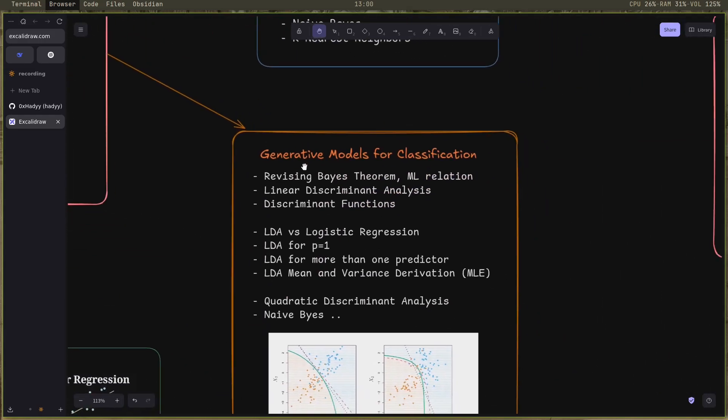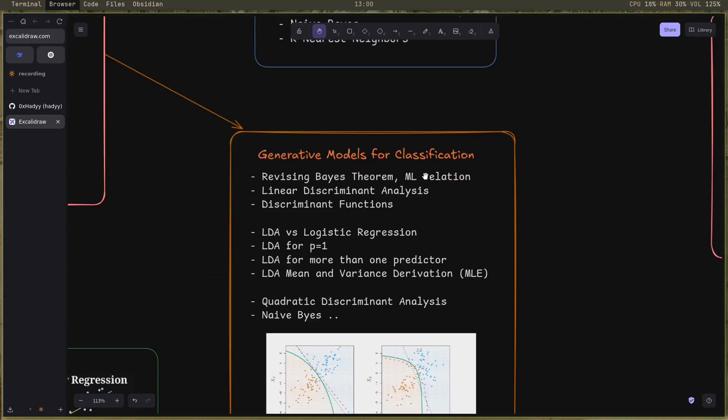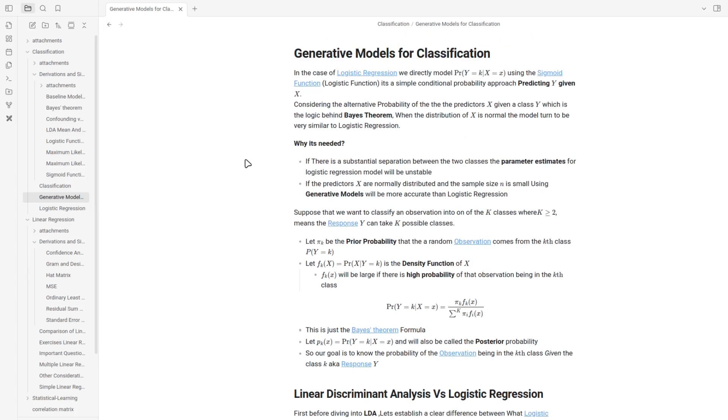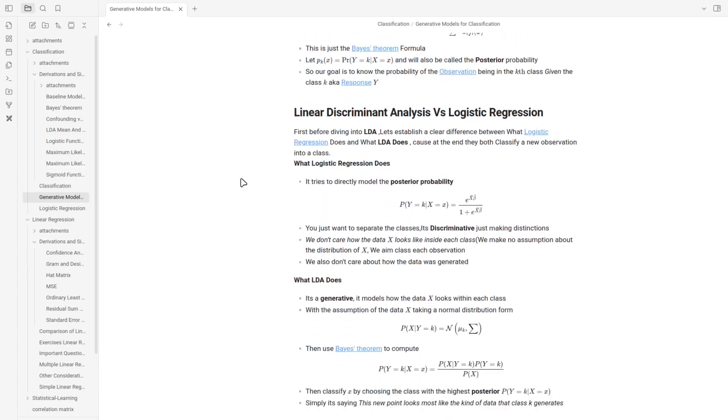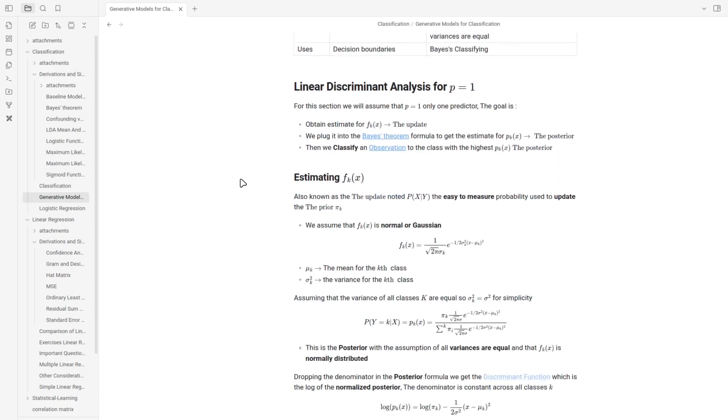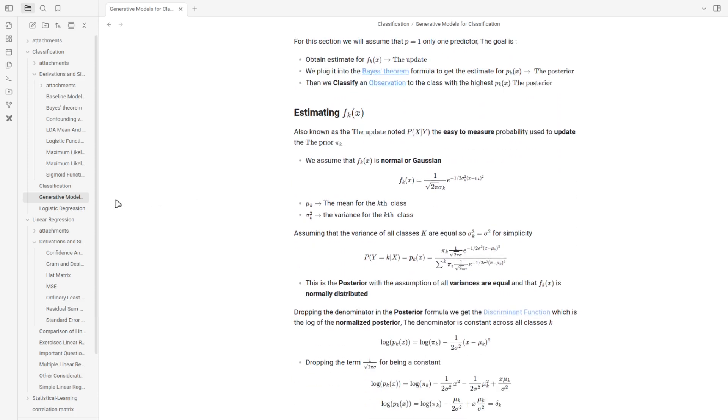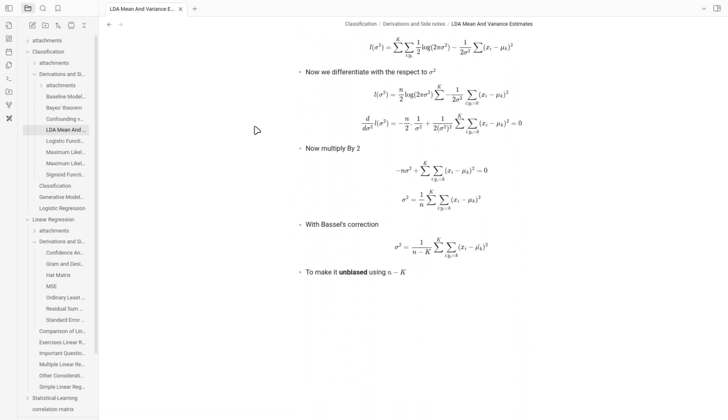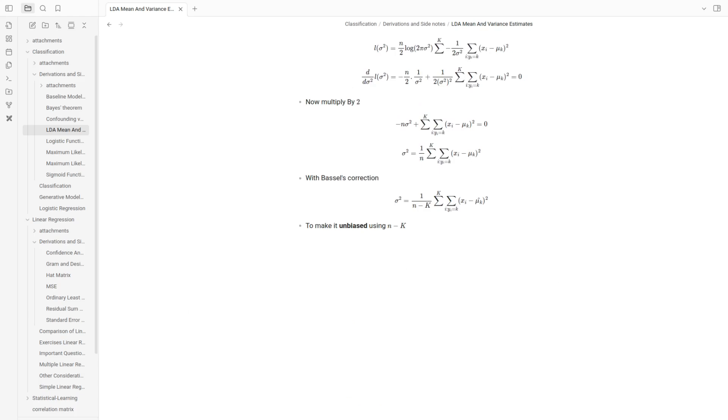After that, I went to generative models for classification. Here we care about how our data X looks like and what class would generate data similar to this observation X we have. I started by revisiting the Bayes theorem and trying to link it to machine learning. I wrote a special note on my GitHub if you want to check it out.